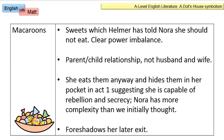In Act One we're told that Nora is eating macaroons — a circular, brightly coloured kind of sweet you can buy in supermarkets. Helmer has told Nora she should not eat these sweets because it will ruin her teeth. This shows a clear power imbalance. Usually it's parents that prohibit their children from eating sweets, but here we're talking about a grown woman and her husband, not a parent and child. The dynamic is one of imbalance.